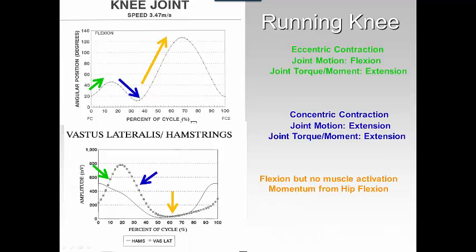Let's look at the knee joint. We have the kinematics on top, EMG of the hamstrings as the solid line, and the vastus lateralis — so your knee flexors and knee extensors. As you start to flex after foot contact, you go into flexion. As we said before, it is an eccentric contraction — the joint is flexing, but the joint torque or moment is extension. That is the definition of an eccentric contraction, and we can see the quadricep muscle group is active during this first 10%.